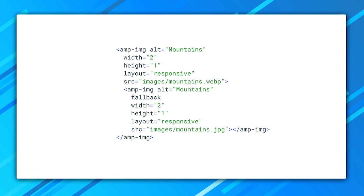Finally, sometimes there's an image format that compresses extraordinarily well but isn't supported in all browsers. That too is supported in AMP, but not the way you might expect. Many AMP elements have the ability to fall back to a different element if the source is not supported, and it's the same with AMP image. If the outer image is a WebP, for example, but the browser doesn't support it, then AMP will load the nested AMP image instead. And there you go — fully responsive web pages with AMP.